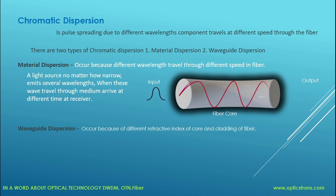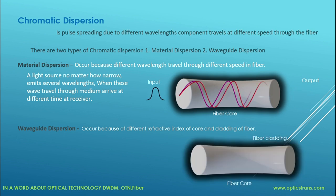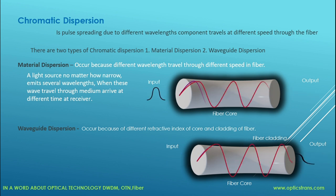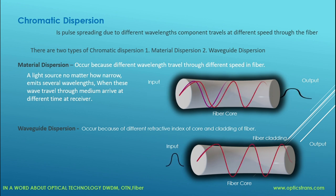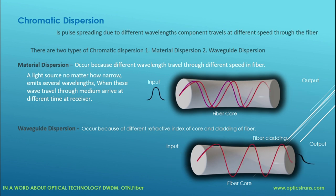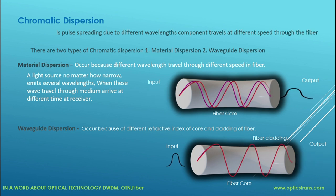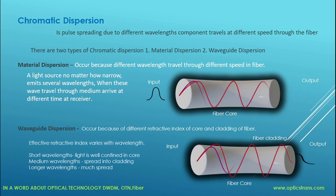Waveguide dispersion occurs because of the different refractive indices of the core and cladding of the fiber. Due to this, the effective refractive index varies with wavelength — some wavelengths are well confined within the core, but some wavelengths spread into the cladding. So they arrive at different times at the receiver, causing the pulse of light to spread out.